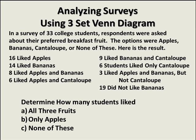The options were apples, bananas, cantaloupe, or none of these. Here's the result: 16 liked apples, 14 bananas, 8 liked apples and bananas, 6 liked apples and cantaloupe, 9 liked bananas and cantaloupe, 6 students liked only cantaloupe, 3 liked apples and bananas but not cantaloupe, and 19 did not like bananas.